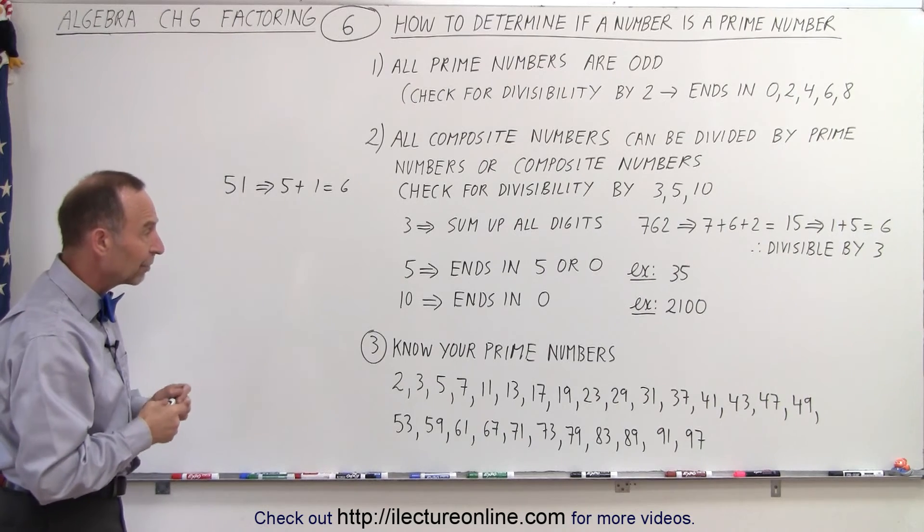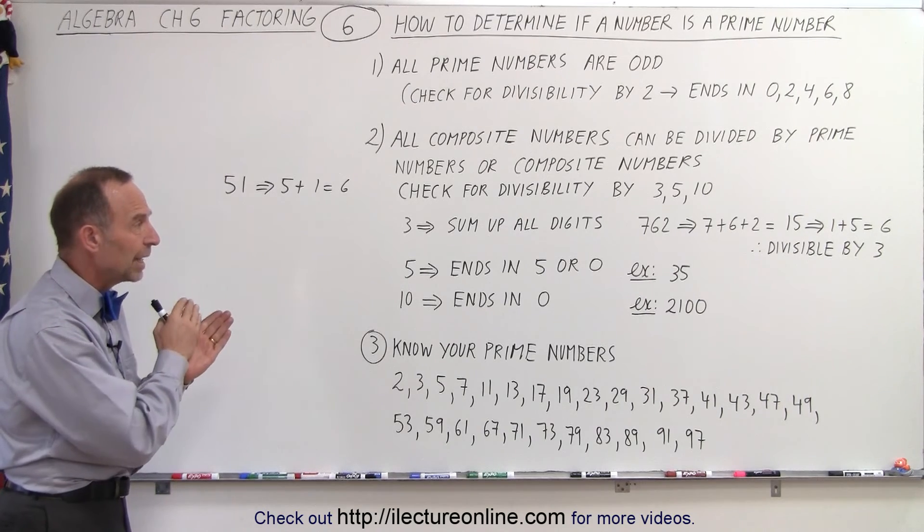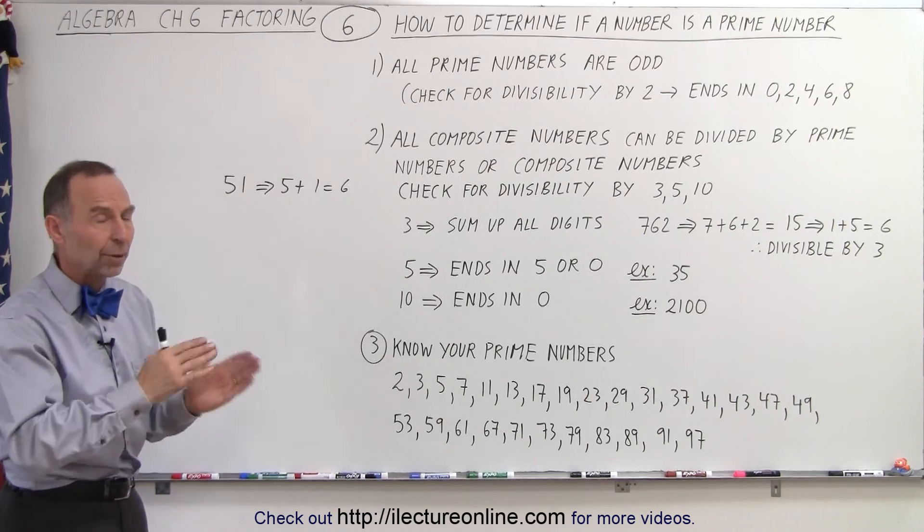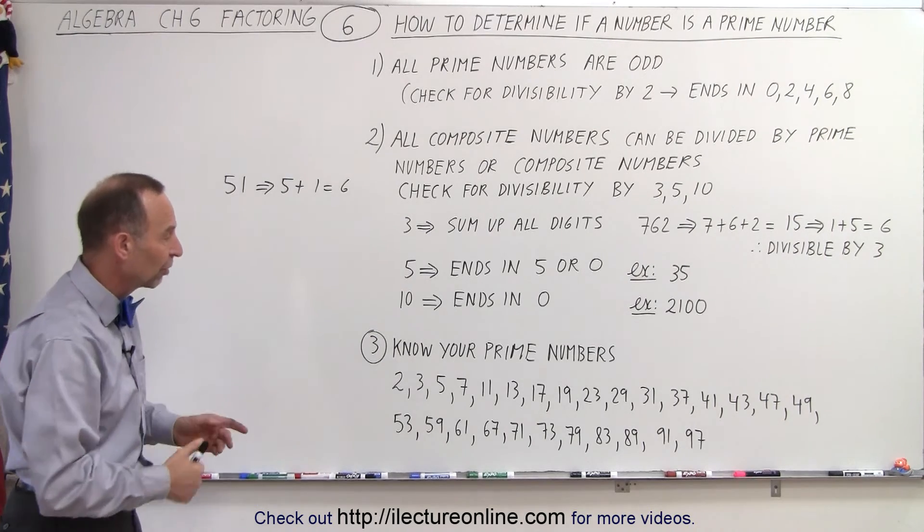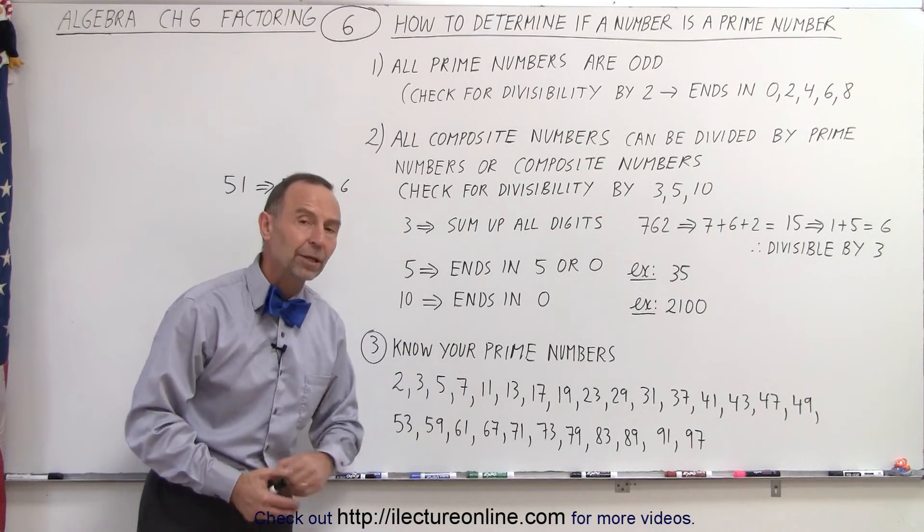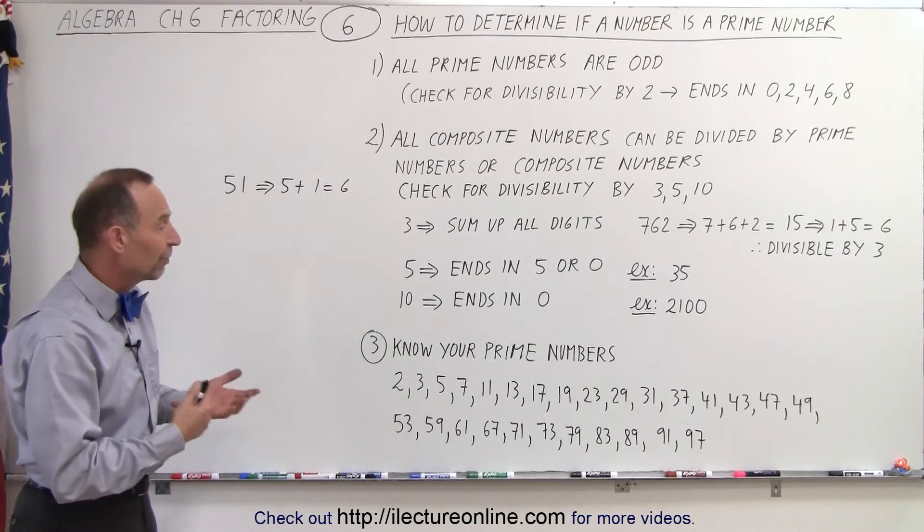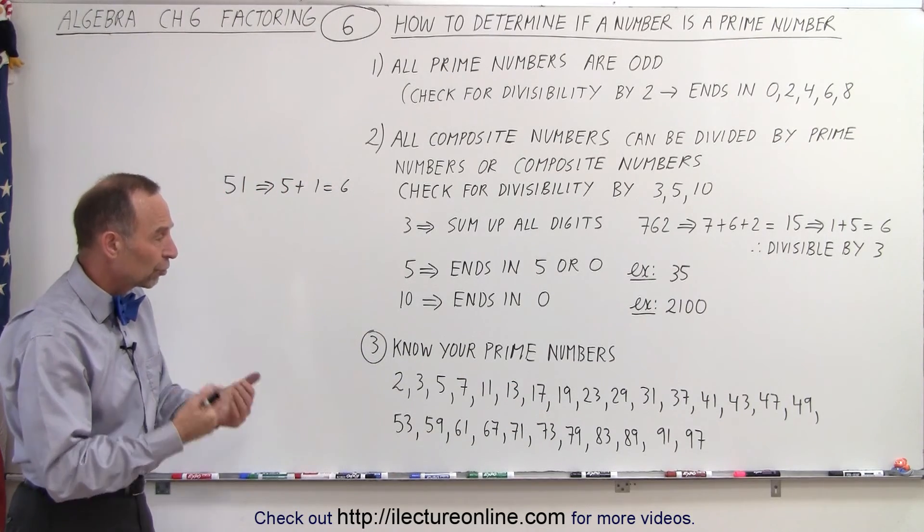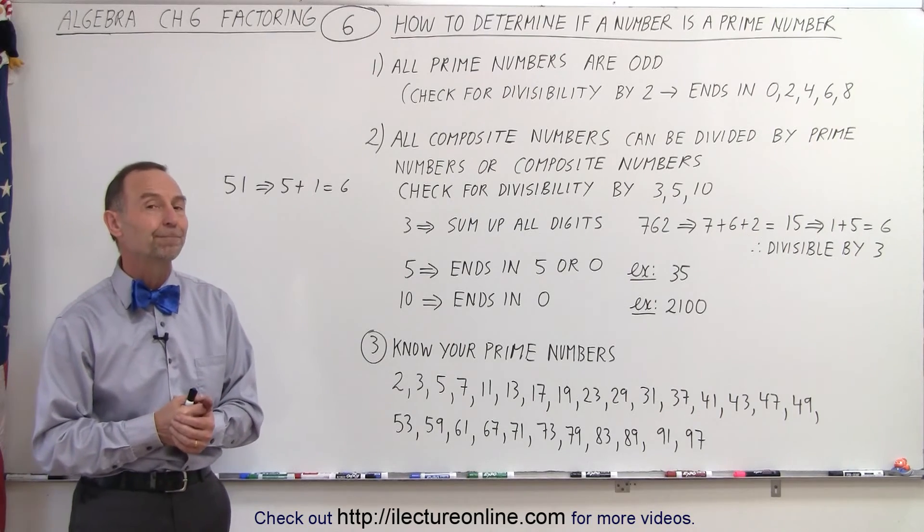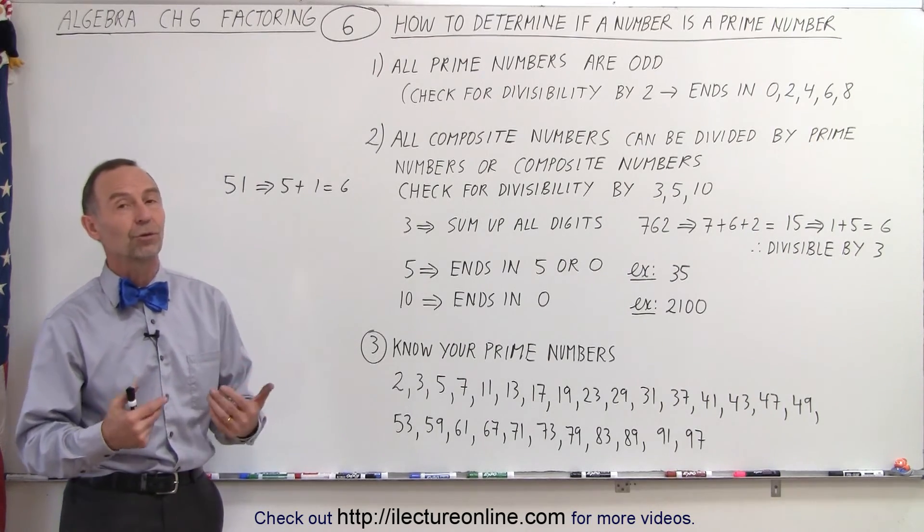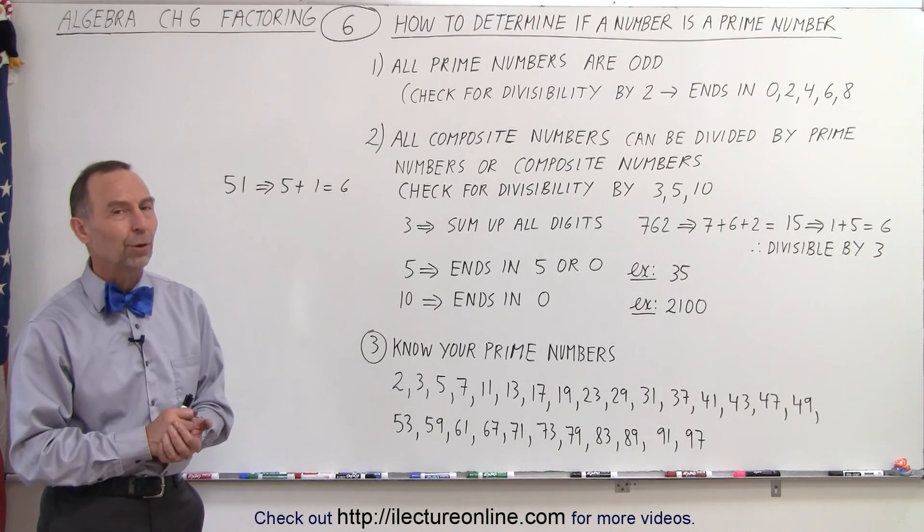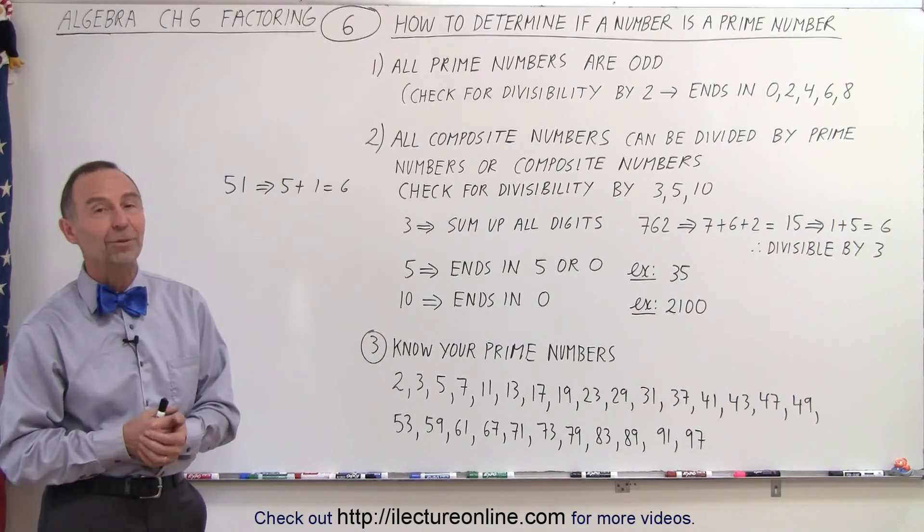So realize that very quickly we can eliminate most numbers to see if it's a prime number or not, and then we can see by checking some additional checks by going up the scale a little bit on the prime numbers to see if it's divisible by one of those or not. And we will show you some examples of that to make it easier to determine if it's a prime number or not. And that is how it's done.